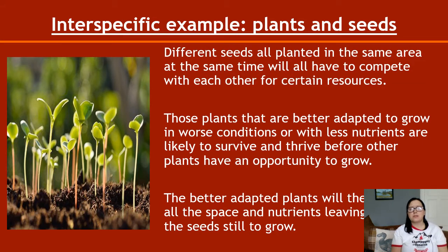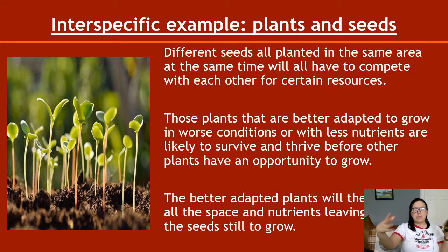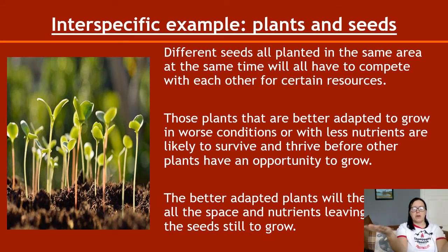Plants and seeds can also engage in interspecific competition. It tends to be particularly intense on the rainforest floor — when a big tree falls over it leaves a gap of light, and there's essentially a race between all the dormant seeds in the ground to grow and make big leaves that block out as much light as possible from other plant species.